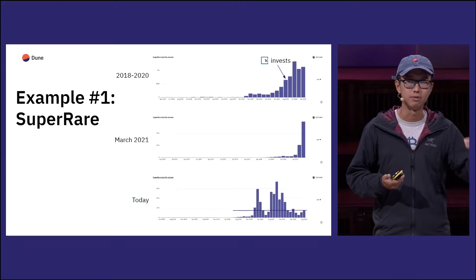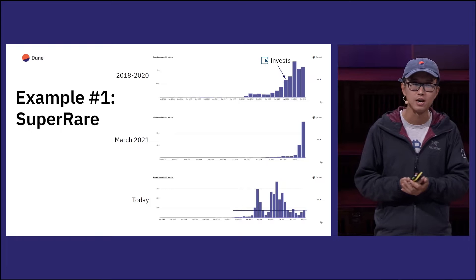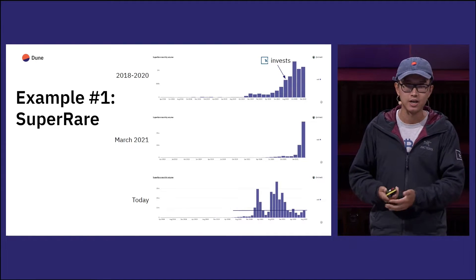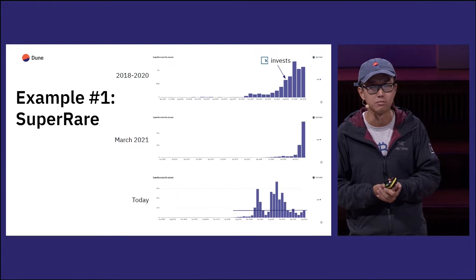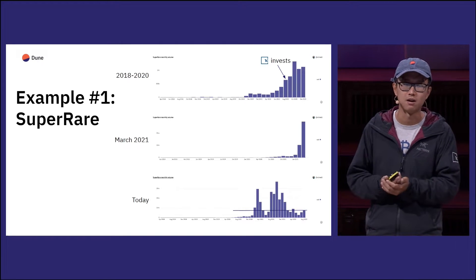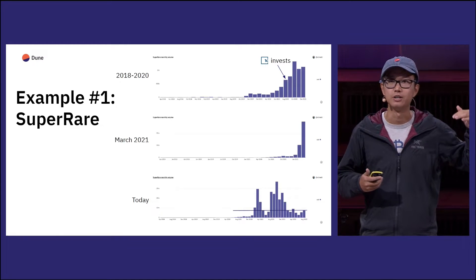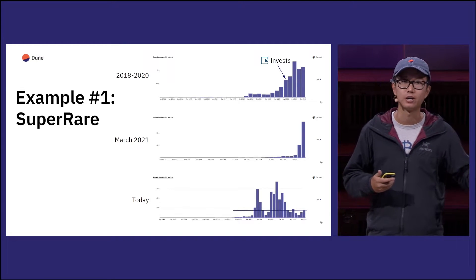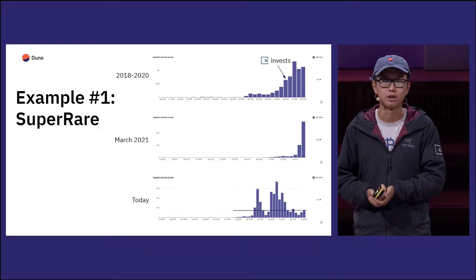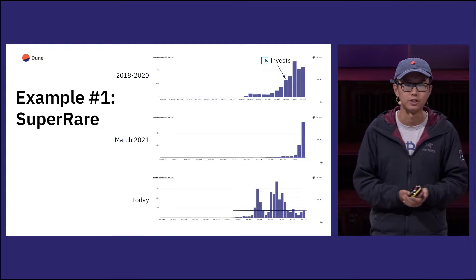So you had the first boom-and-bust cycle, and then you had another one late 2021. Things kind of retraced back. But if you see the black line on the bottom graph, the bottom that we are right now is still way higher than where SuperRare was at end of 2020. So overall, the state of the crypto art market is much more robust than it was when SuperRare started.